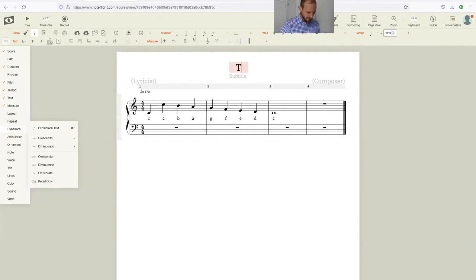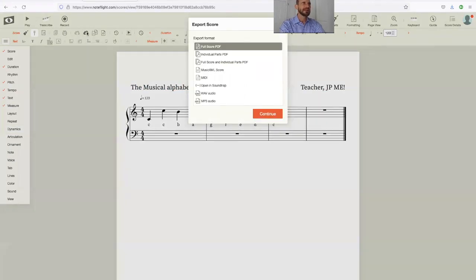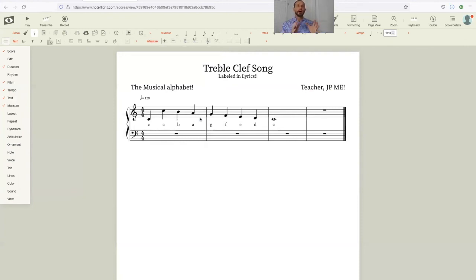Labeled. All letters covered. Found the middle C and the C above it. I did it. So this is treble clef song. Subtitle: labeled in lyrics. Composer, that's right. Let's put that. Teacher, J.P. May. Lyricist: the musical alphabet. I hope that helps. I look forward to seeing what you do. Be creative. Have fun with it. Or if you're pressed for time, just get it done. But hopefully you'll enjoy it. And when you're done, be sure to save it and then download it in a full score PDF. Hopefully you'll also be talking about your song in the videos that you'll be posting, because I'd like to hear the song out there live if I could. Looking forward to seeing you next week.